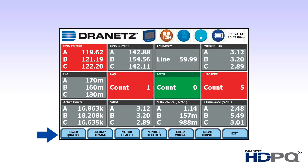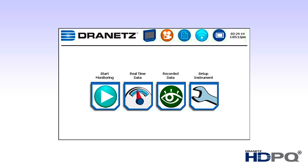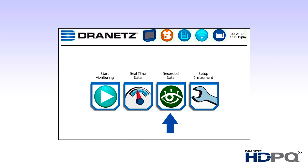At the bottom of the display are soft key icons with functions that are dependent upon the data displayed in the working area. The Dranitz HTPQ Family has two home screens. When you first power on the instrument, the power on home screen is initially displayed. The power on home screen provides a launching point for all major instrument functions, including starting a monitoring session, reviewing real-time data, reviewing previously recorded data, and setting up miscellaneous instrument functions.